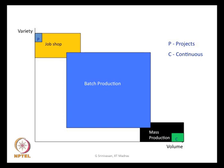The x-axis represents the volume of production and the y-axis represents variety of production. This is also called the volume-variety graph. There are three big areas in this graph: the one in the middle which is called batch production, the one to its left which is called job shop, and one to its right and below which is called mass production.